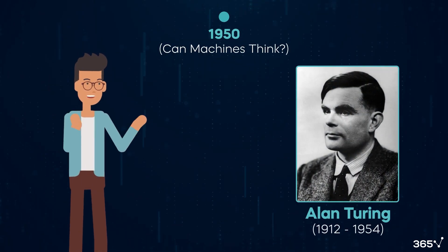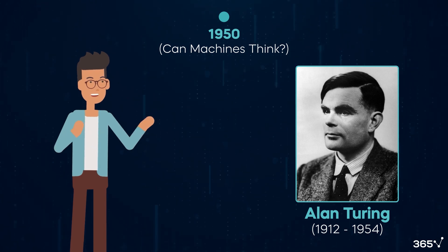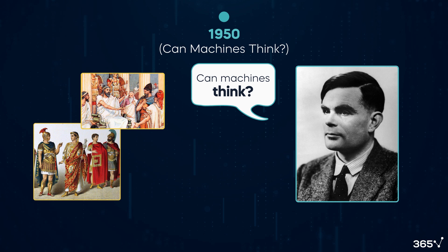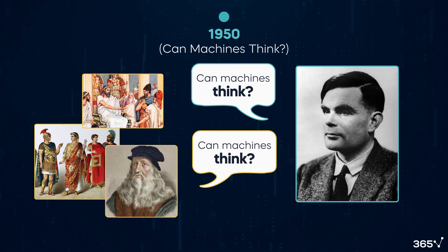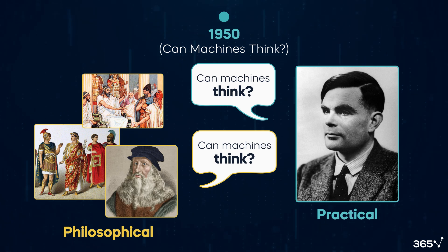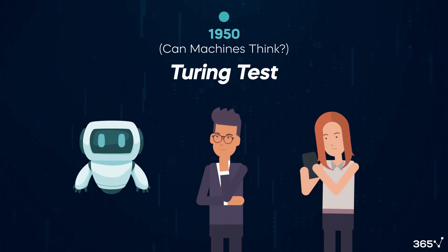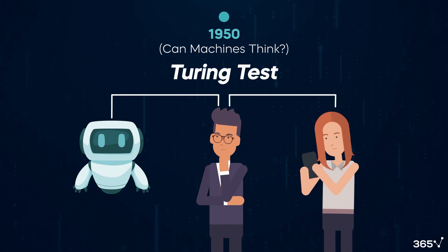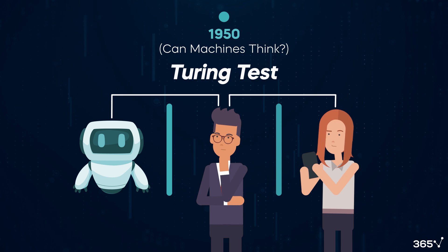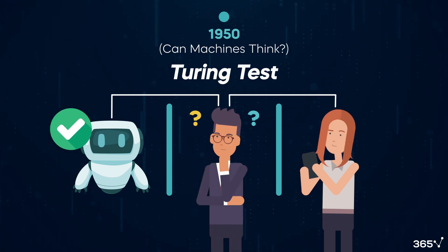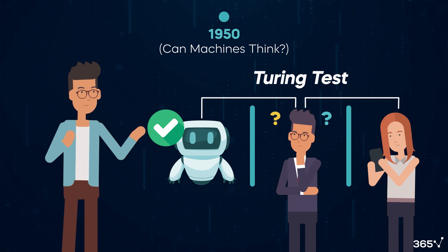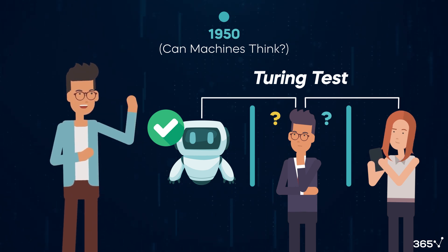In 1950, the renowned British mathematician and computer scientist Alan Turing asked, "Can machines think?" in a scientific paper. This wasn't the first time someone had asked this question, but Turing's significant contribution was to move the discussion from theoretical and philosophical to practical and experimental terms. He described an explicit criterion, later called the Turing test, for evaluating machine intelligence. In the Turing test, a human interrogator engages in a natural language conversation with one human and one machine, both hidden from view. If the interrogator cannot reliably tell the machine from the human, the machine is considered to have passed the test and exhibited human-like intelligence. This set the stage for modern computational approaches to AI, making his inquiry a pivotal moment in the history of artificial intelligence.